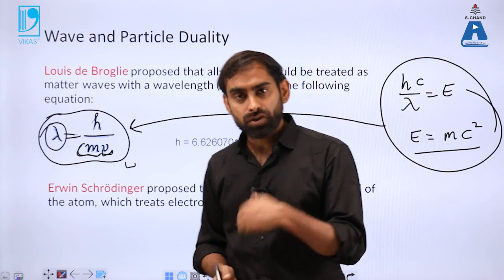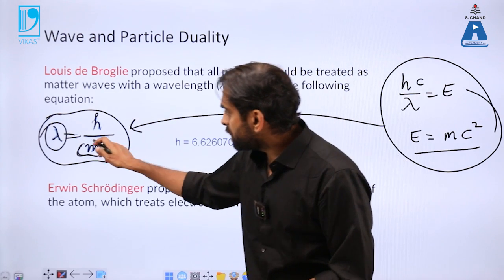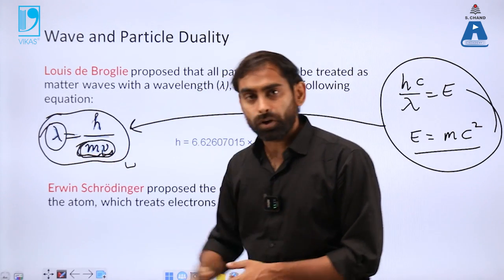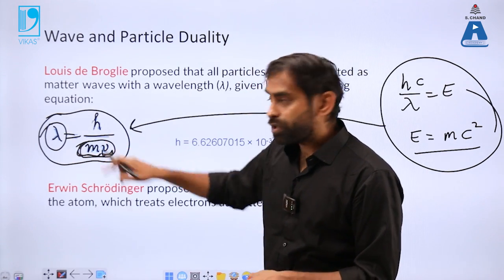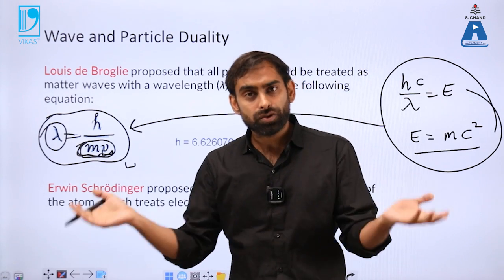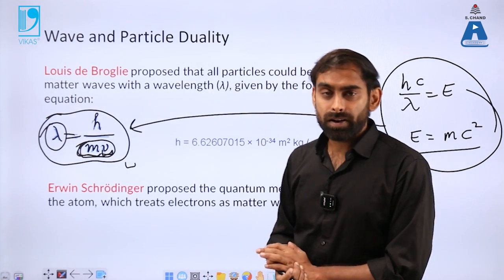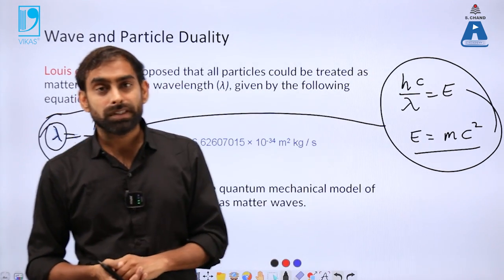In order to have a significant wavelength by which a particle could appear as wave, we should have this denominator as large as possible. Either you should have velocity very high, or mass very high, or both quantities very high.